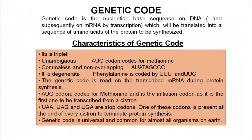Before moving ahead we must know what a genetic code is. Genetic code is the nucleotide base sequence on DNA which will be translated into the sequence of amino acids of the protein to be synthesized. The characteristic of genetic code is that it is a triplet. DNA contains nucleotides made up of nitrogenous bases, and three nitrogenous bases - such as adenine, guanine, cytosine - form the genetic code triplet. With four total nitrogenous bases, the DNA can be transcribed into messenger RNA using the rule of complementarity.